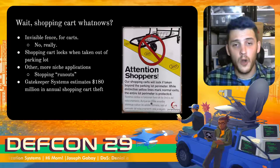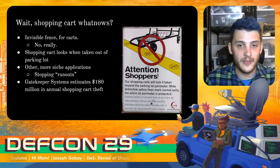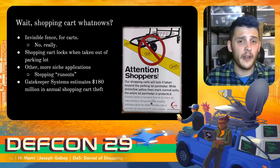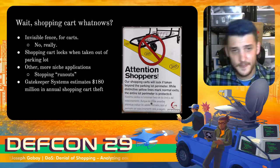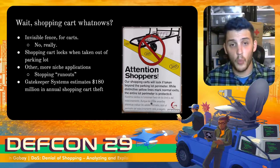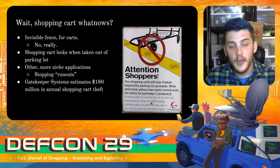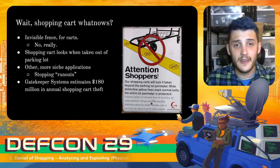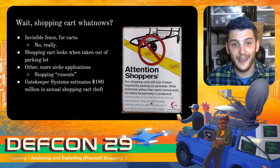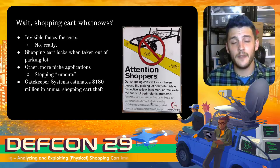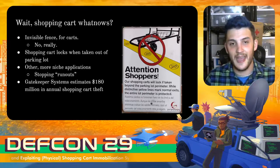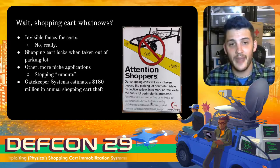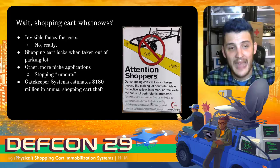For those of you who aren't familiar with shopping cart security wheels — and they're not everywhere — you usually only see them in pedestrian-accessible parking lots where there's a risk of somebody walking off with a shopping cart. Basically, it's an invisible fence for shopping carts. When you take a shopping cart outside of an approved boundary, usually a parking lot, one of the wheels will sense this and lock itself using an internal mechanism, and you can't take the cart any further.